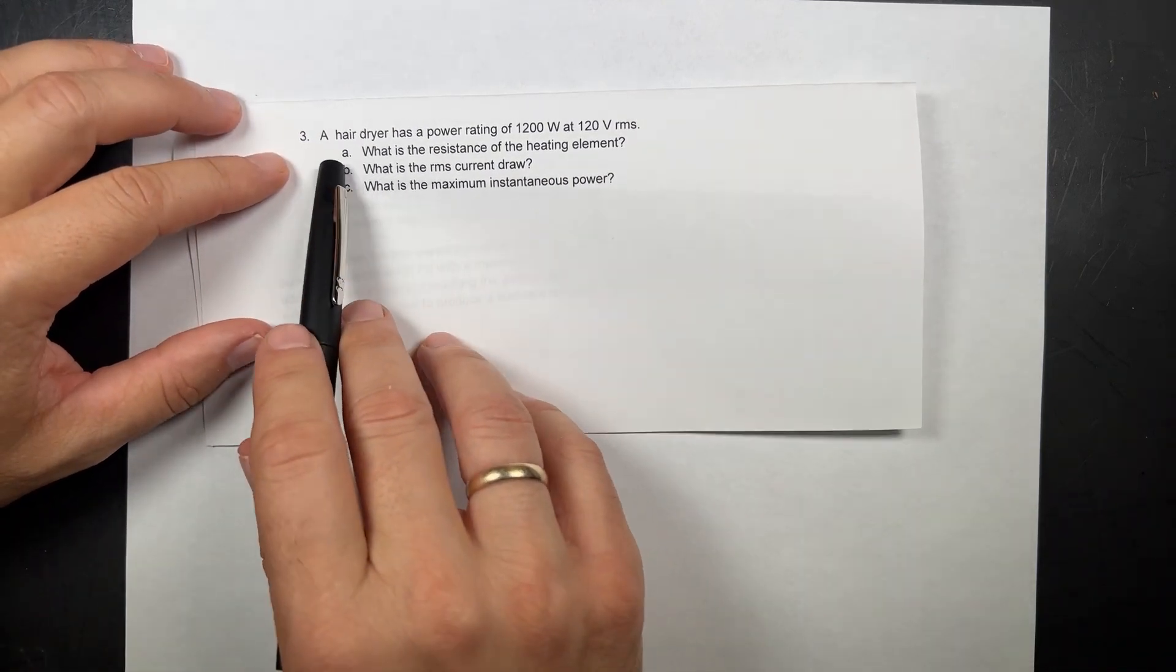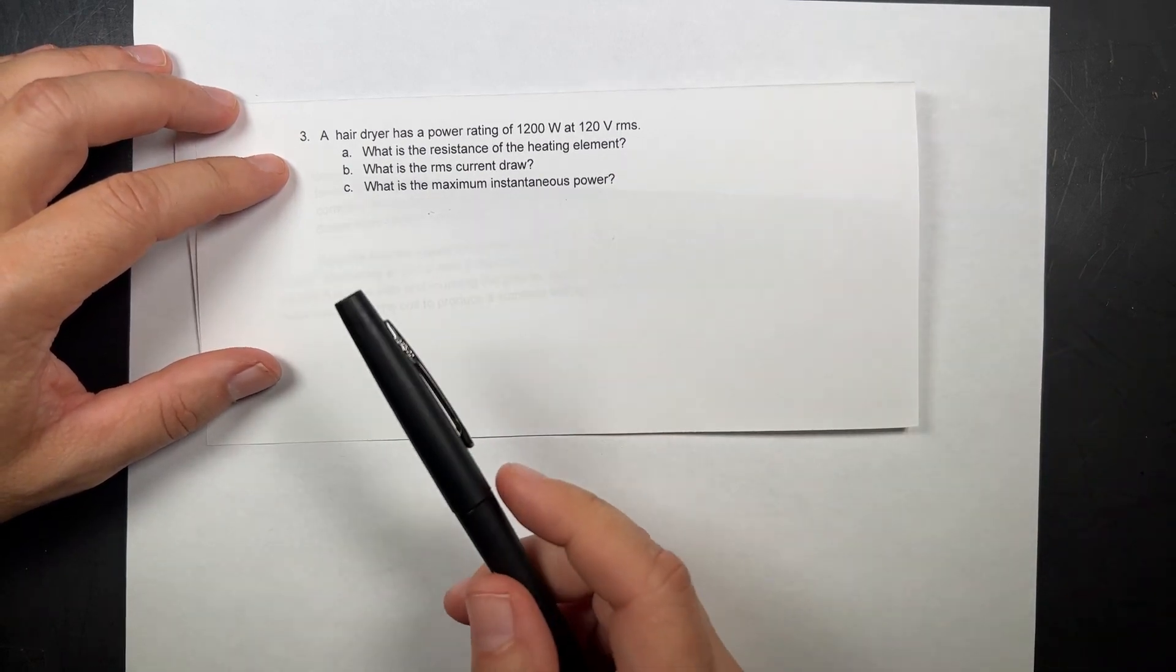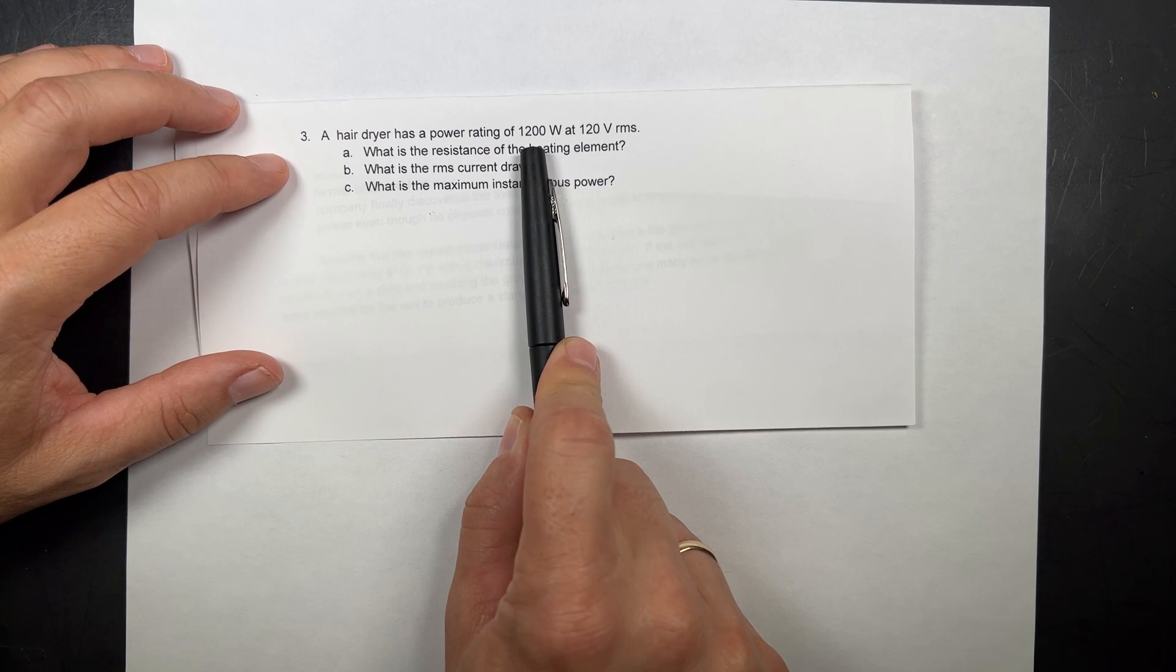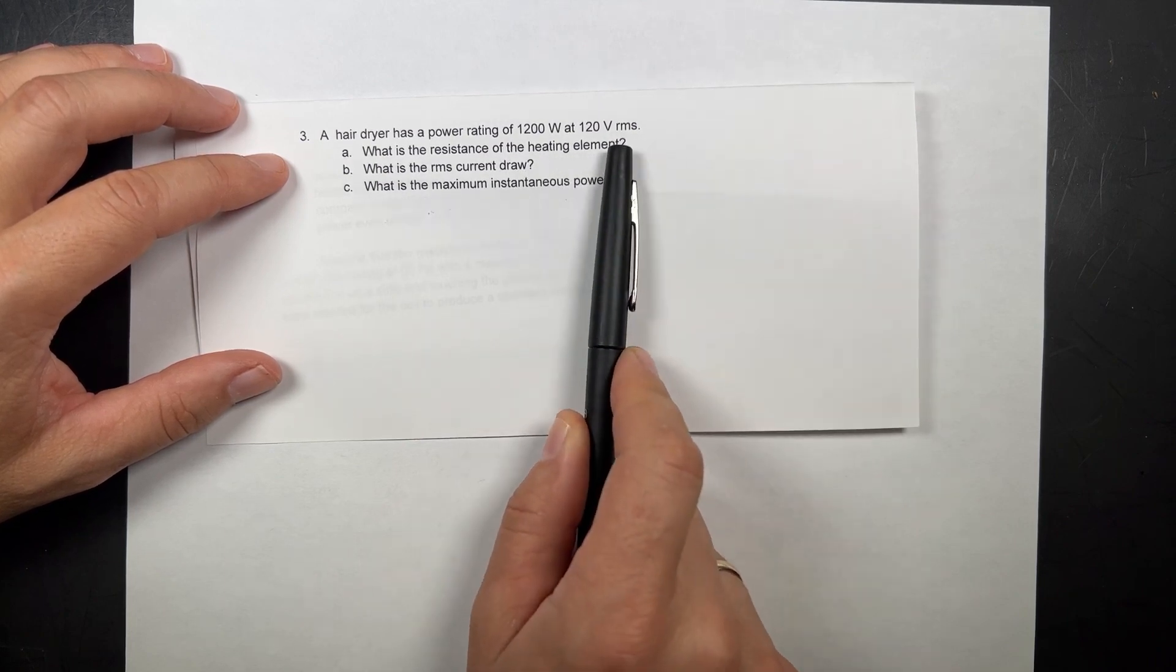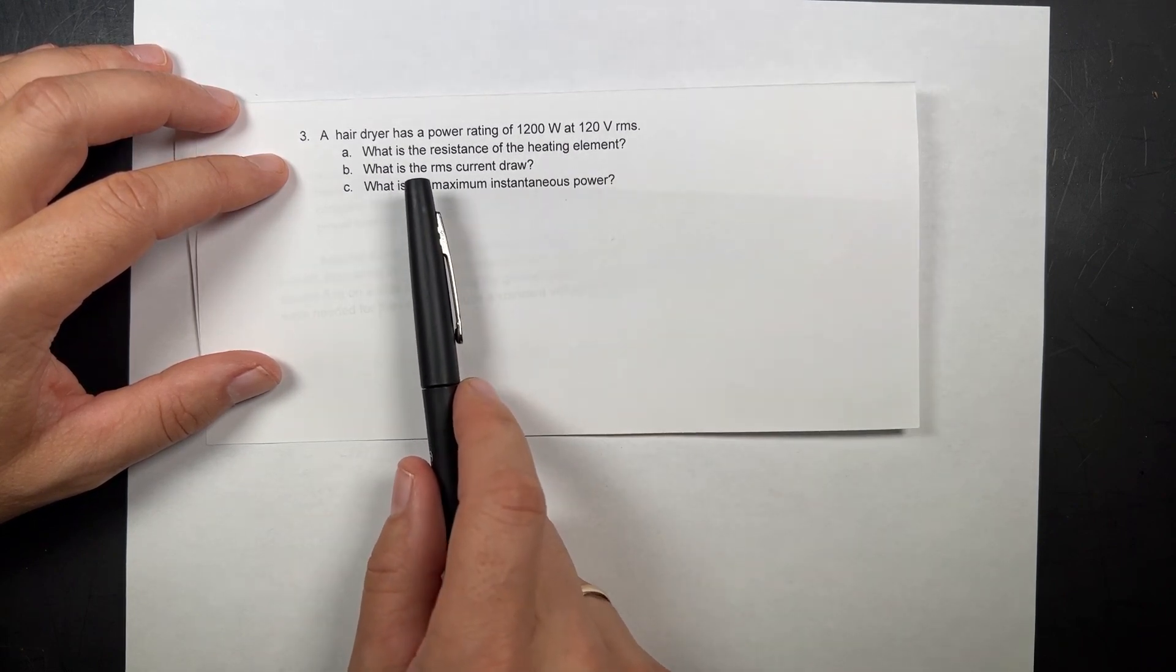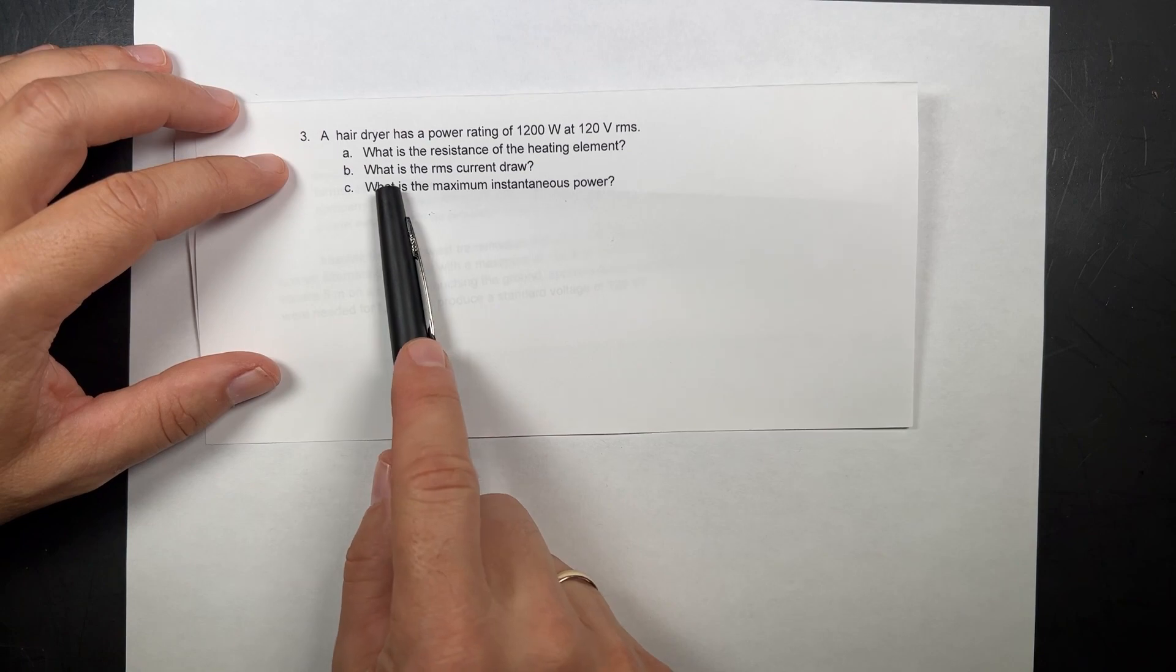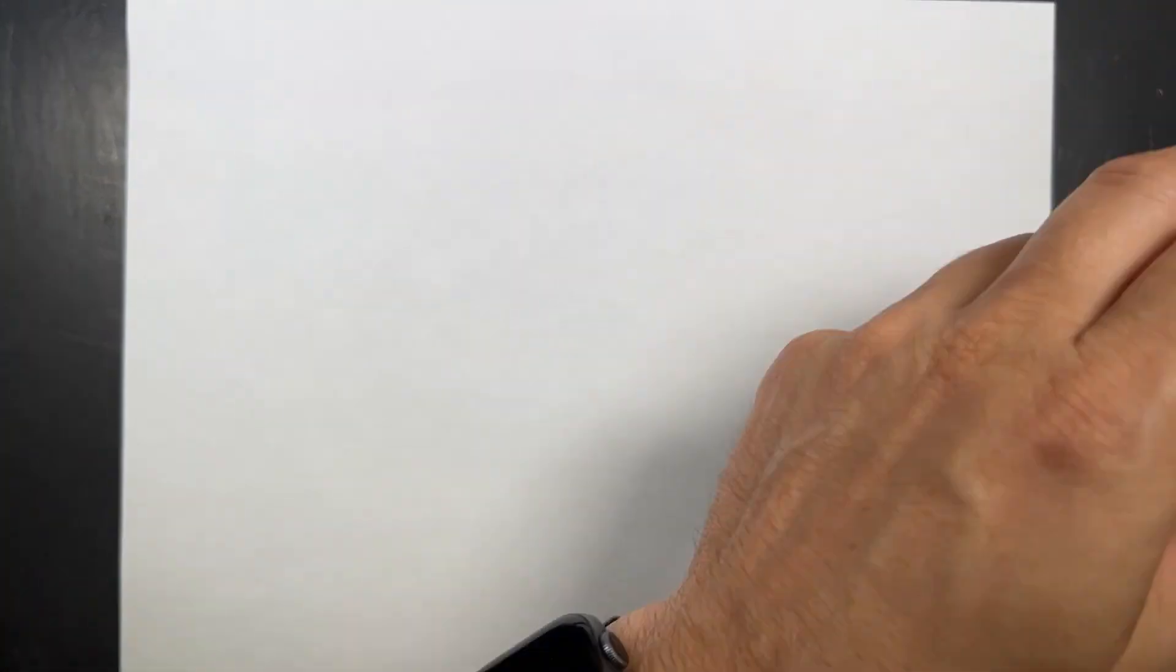Here is a problem on AC circuits. It's kind of small, so let me read it to you. It's a pretty straightforward problem. A hair dryer has a power rating of 1,200 watts. That's pretty normal. Those hair dryers use a lot. It uses a 120 volt RMS source. What's the resistance of the heating element? For the most part, a hair dryer is just a big resistor that gets hot. What is the RMS current, and what's the maximum instantaneous power?